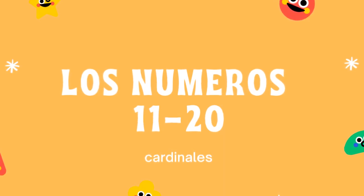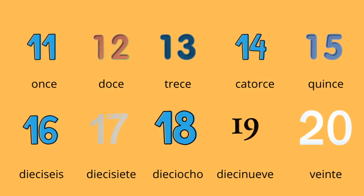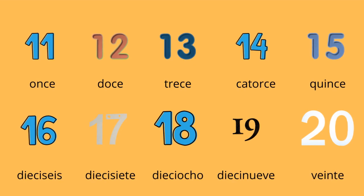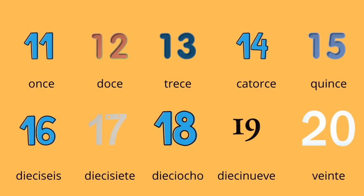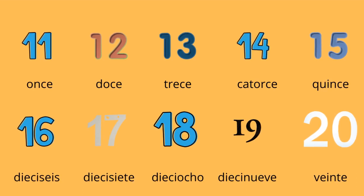Now let's do los números once al veinte, cardinales. Repeat after me. Once, doce, trece, catorce, quince, dieciséis, diecisiete, dieciocho, diecinueve, veinte. I don't know if you noticed, but numbers between 16 and 19, you hear the word diez, and then you hear the number following it. There's a pattern there.